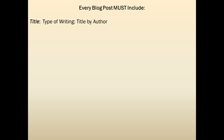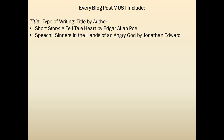Every blog post needs several things. First, it needs a title. That title should consist of the type of writing, followed by a colon, followed by the title, followed by the author's name. For instance, if you're writing about Edgar Allan Poe's Telltale Heart, you should have the type of writing — short story or fiction — then: The Telltale Heart by Edgar Allan Poe. Or: Speech: Sinners in the Hands of an Angry God by Jonathan Edwards. Students really need to stick to that format — it keeps the blog consistent and easy for everyone to navigate.